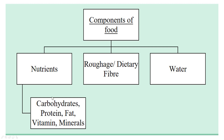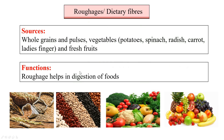We have studied about nutrients — now let's study about dietary fiber and water. Dietary fiber helps us in digestion of food. Whole grains and pulses, vegetables such as potatoes, spinach, radish, carrot, and lady's finger, and fresh fruits are some of the sources of dietary fiber.